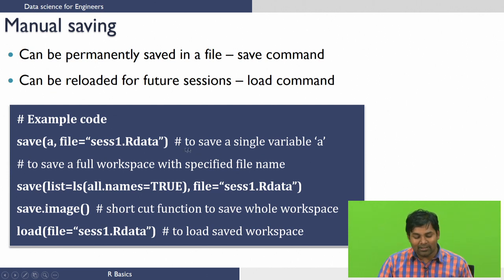In the comments you can see that this is the command you can use to save a single variable a. If you're willing to save the full workspace, you need to use this command: save, list equals ls with the argument all.names equals TRUE, and you can give the file name whatever you wish to. The shortcut key for this command, which is given here, is save.image, which saves the data in the environment into a .Rdata file in the current working directory. Once you do that, you can load the workspace information at a later point of time whenever you want using this command load. You can just specify file equals the file name which you saved the data into.